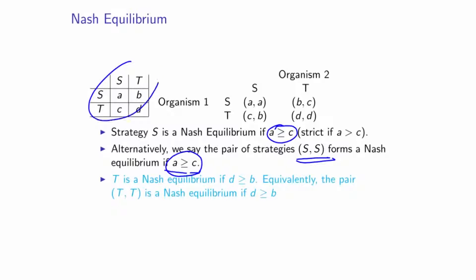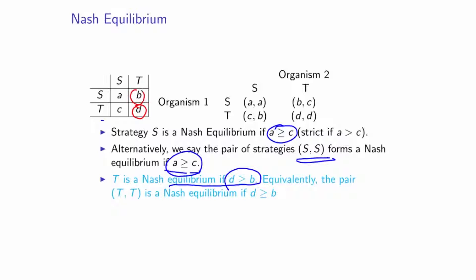If A is strictly bigger than C, then you would call S a strict Nash Equilibrium. For the other strategy T, we compare the values D and B: if D is greater than or equal to B, then T is a Nash Equilibrium — or equivalently, the pair T, T is a Nash Equilibrium if D is greater than or equal to B. The strict Nash Equilibrium applies when you have a strict inequality.